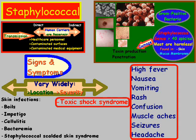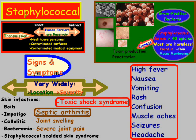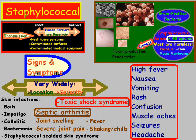Then there's septic arthritis, with symptoms such as joint swelling, severe joint pain, fever, shaking, or chills. As you can see, there's a wide variety of different signs and symptoms, and that's essentially because there are over 40 different species of the Staphylococcus genus.